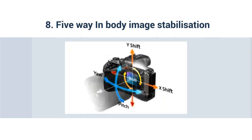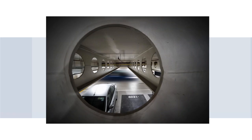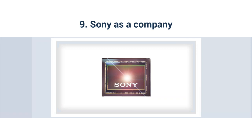Number eight: five-way in-body image stabilisation. These work famously well — a number of manufacturers have these and the Sony works really, really well. It's a fantastic system allowing you to shoot handheld at really low shutter speeds. And if you're using third party lenses, because it's the actual sensor that's stabilised, whatever lens you've got on there you can still benefit from the in-body stabilisation system. I think this one was shot at about half a second — we've got the car blurring past but the rest of the frame is nice and tight and sharp.